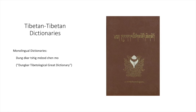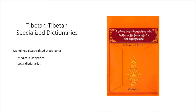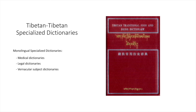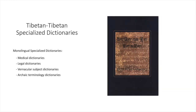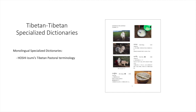A similar monolingual dictionary published in the PRC in the early 2000s was the Dungkar Dictionary, which is more encyclopedic than a normal dictionary and contains extensive biographical entries and long Tibetan phrases not normally found in a proper dictionary. The 1990s also saw the publication of a number of smaller subject-specialty monolingual Tibetan dictionaries covering topics such as medical terminology, legal terminology, common vernacular terms, archaic terminology, and other subject-specific glossaries. One of particular note is Izumi Hoshi's Tibetan Dictionary of Pastoralism, which contains a number of illustrations of common pastoral terms that would not be found in a general-purpose dictionary.